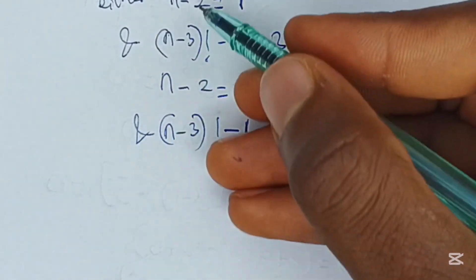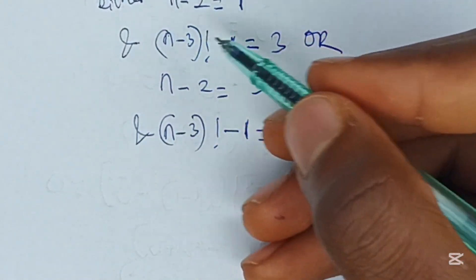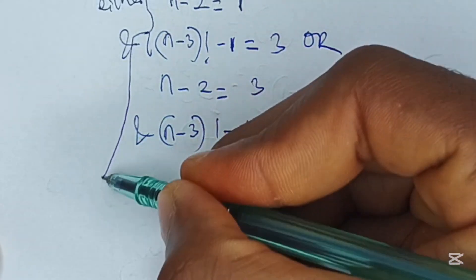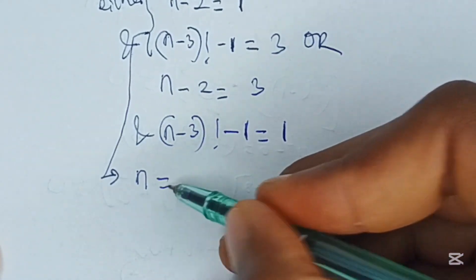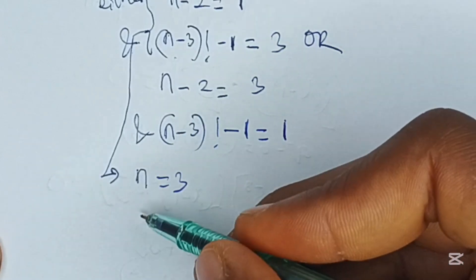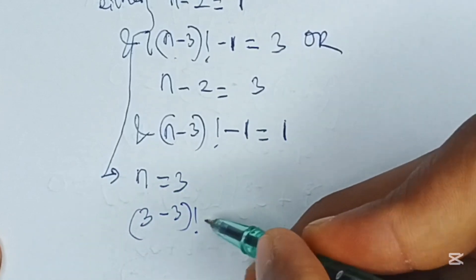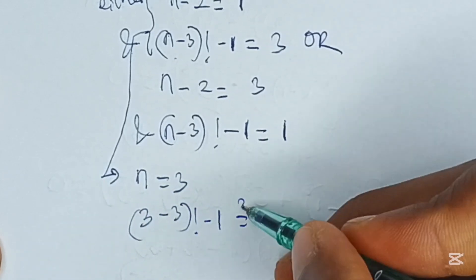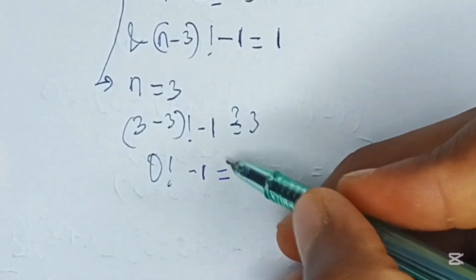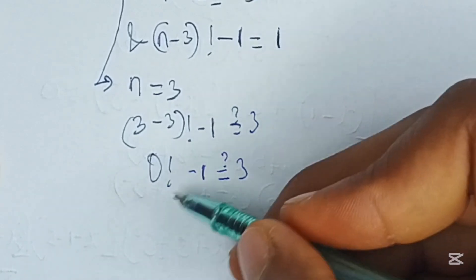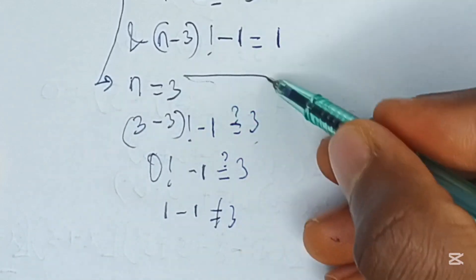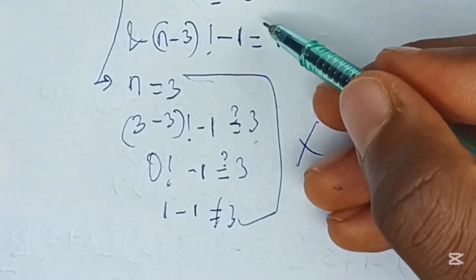From the first condition, if n minus 2 is equal to 1, it invariably means n is equal to 3. Testing this, we have 3 minus 3 factorial minus 1. Is this equal to 3? 3 minus 3 factorial is 0 factorial minus 1, and 0 factorial is 1, so 1 minus 1 equals 0, which is not equal to 3. Hence, this solution is null and void.